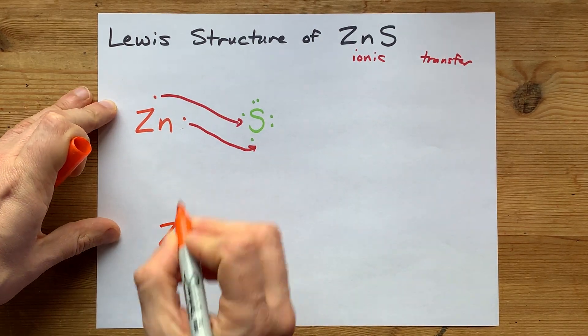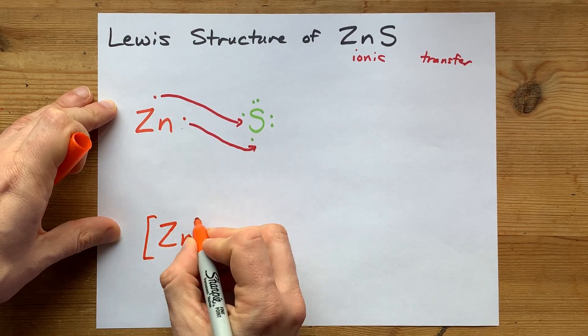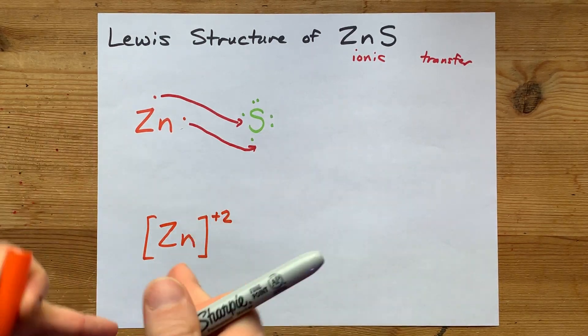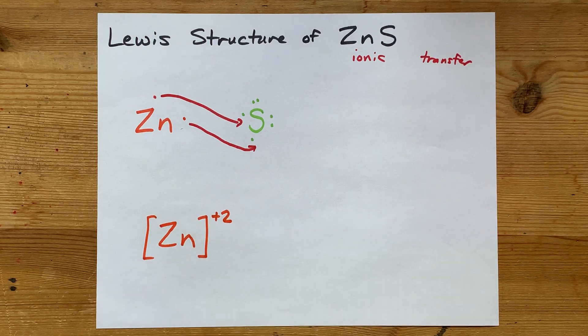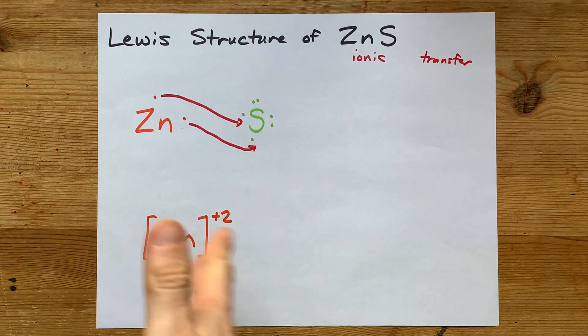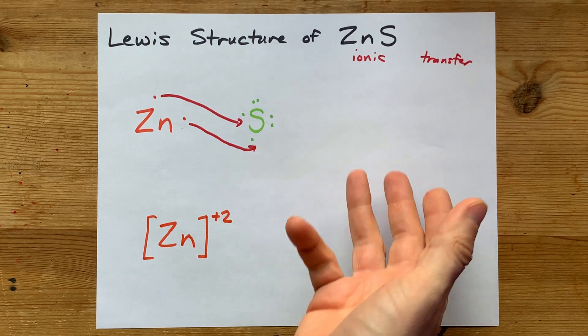You got to draw your Zn without its valence electrons. It now has a charge of positive two because it gave away two negatively charged electrons and losing minuses makes it plus.